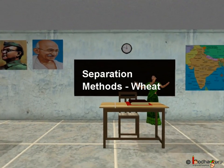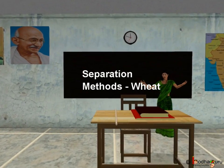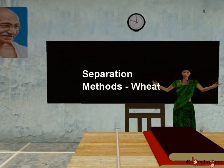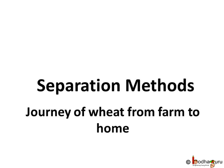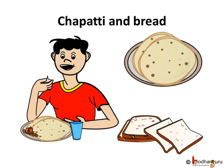Hello kids! In our previous class we traced the journey of rice from the farm to our homes. Now let us see how we get the wheat for our chapatis and even bread, which is the main food for many people. Wheat is currently second to rice as the main human food crop.